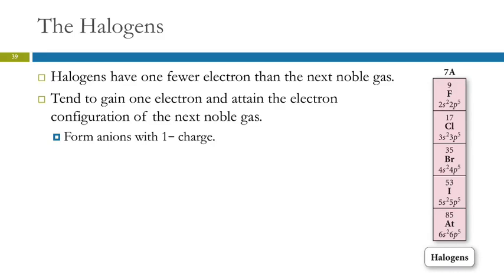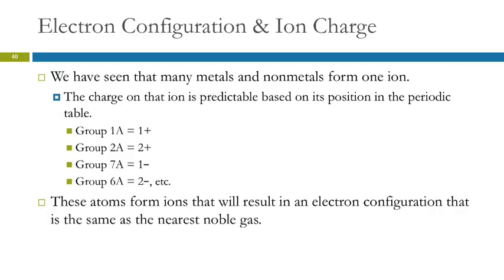We see that the quantum mechanical model is explaining these patterns in ion charges by how the electrons are arranged. We learned how to predict some of the charges of the main group ions, and it's predictable from the periodic table because of the quantum mechanical model.